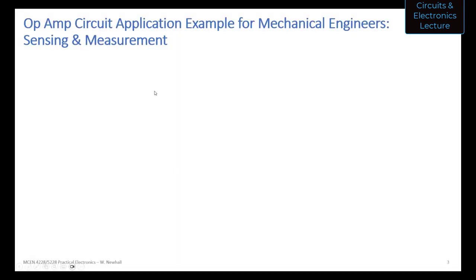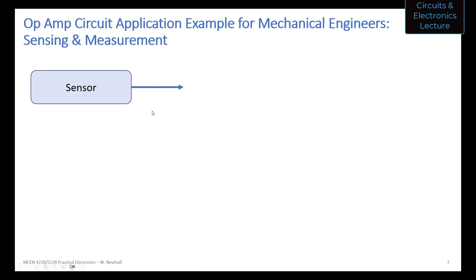I wanted to give an example of using an op amp circuit in a very practical application. This is very relevant to mechanical engineers — the topic is sensing and measurement. We use sensors or transducers to take physical quantities like temperature, strain, pressure, and light intensity, and convert those into an electrical signal that represents those physical quantities.